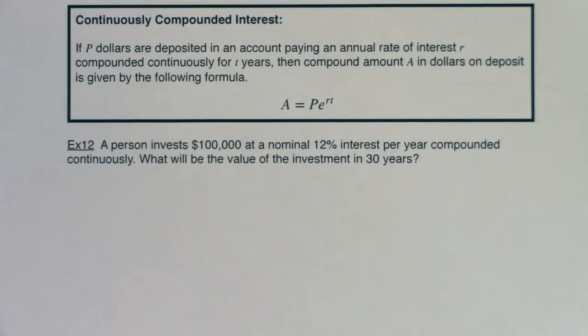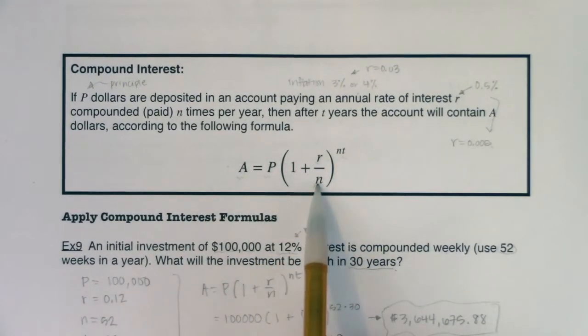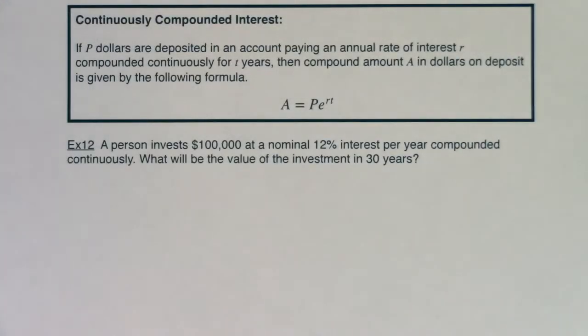In examples 9 and 10, we looked at a type of savings account where you had interest compounded n times a year. We had this formula where you were getting interest paid to you n times per year. We're going to swap that out with continuously compounded interest, which means you're getting interest every millisecond of every second of every minute of every hour of every day. You're just getting interest on interest on interest.